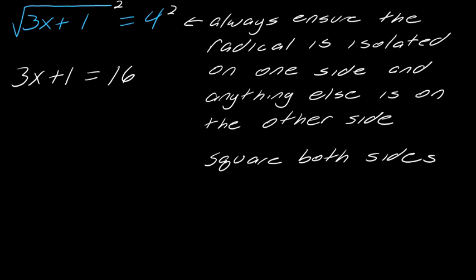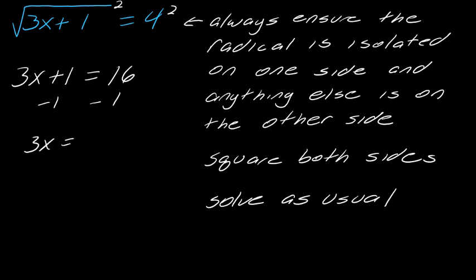After you square both sides, then you want to solve as usual. So in this case, I'll go ahead and subtract 1 from each side. Now I get 3x equals 15. Divide both sides by 3, and x equals 5.